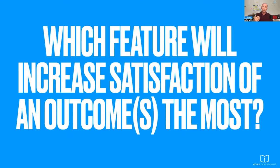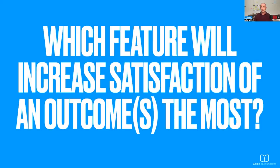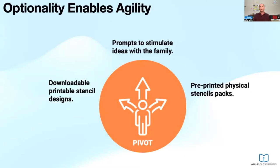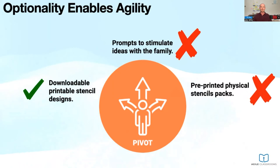There are probably other things to consider — costs and feasibility. But the key question is: which solution is going to increase the satisfaction level based on that outcome statement? We might rule some out — maybe we did a prototype and learned it didn't work, or the printed stencils cost too much to ship. We decided to go digital, and a downloadable printable stencil design is going to do that best. We can always add community-driven designs over time, and if we're wrong, we can pivot to something else.